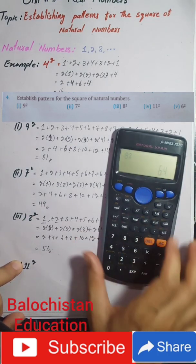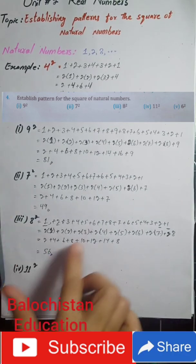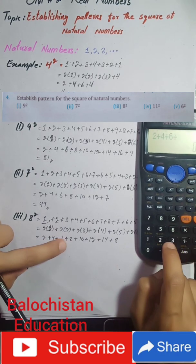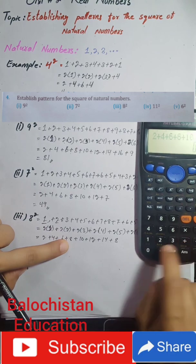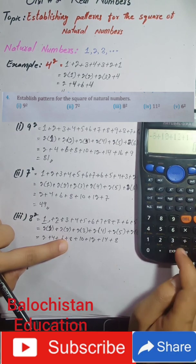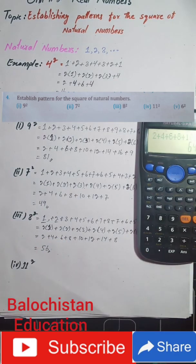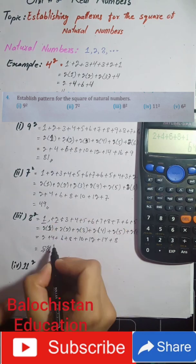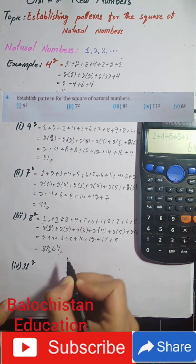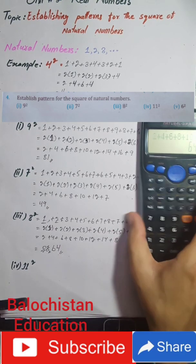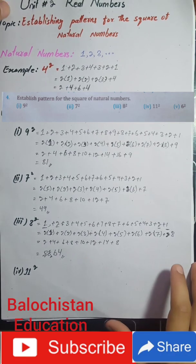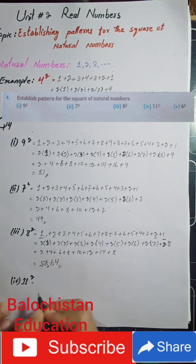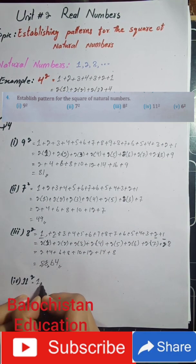Adding: 2 plus 4 plus 6 plus 8 plus 10 plus 12 plus 14 plus 8 equals 64, which is the square of 8. I made a mistake in calculating earlier — if you get a wrong answer, first recalculate it. This is the second last option and the last option — the square of 11 — is your homework. Actually, let's also solve it now. Start from 1.